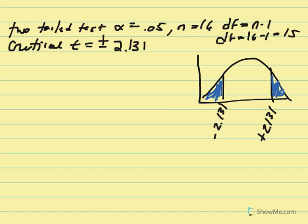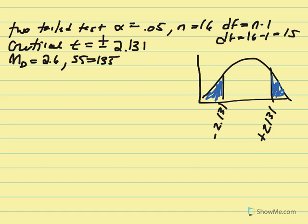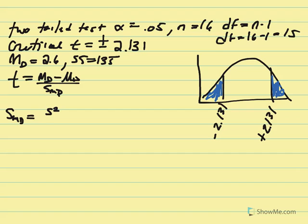We'll calculate our t value. The given values are mean difference equals 2.6, SS equals 135, and n equals 16. The t formula is the sample mean difference minus the hypothesized population mean difference over the estimated standard error. We use variance since we were given SS. Variance equals SS over degrees of freedom: 135 divided by 15 equals 9.